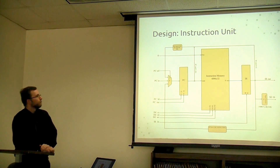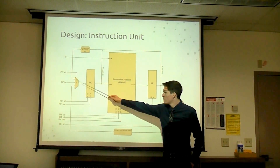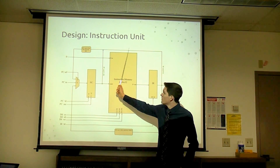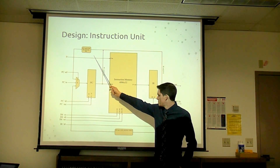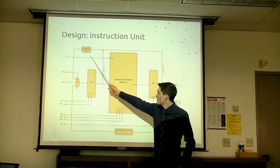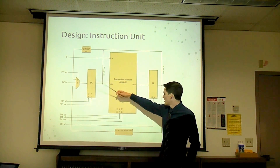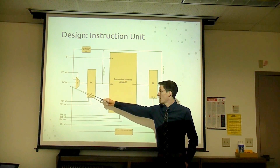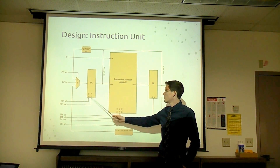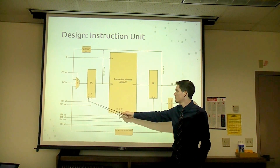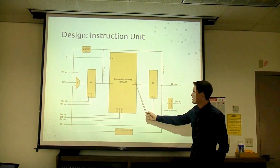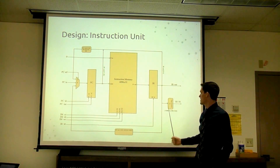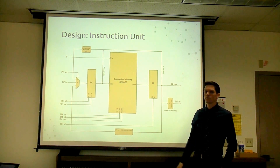The instruction unit has a three-to-one input multiplexer that takes the jump address, the branch address, and the jump register address, loaded using the PC load signal. PC goes to instruction memory, fetches the instruction, stores it into the IR, and IR outputs it — sign-extending the last 16 bits if needed for immediate instructions.